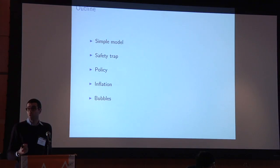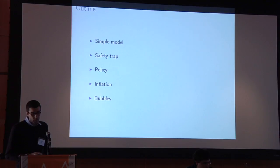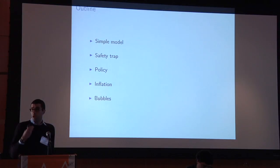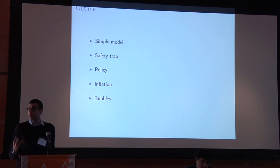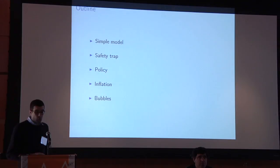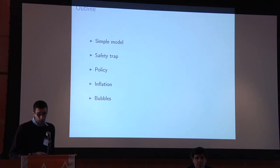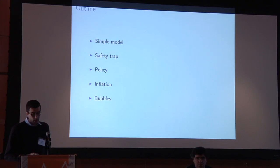The term 'safety trap' is meant to emphasize both the similarities with liquidity traps and some of the differences. The differences have to do with the reason why you reach the zero lower bound. I'll talk a lot about policy — which policies are effective in a safety trap — and you'll see that the reasons why you reach the zero lower bound are very important. I'll also talk about inflation and, if time permits, financial bubbles in a secular stagnation environment.